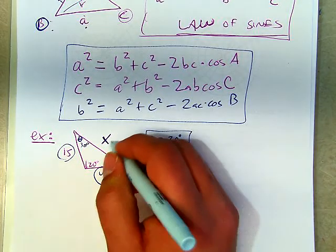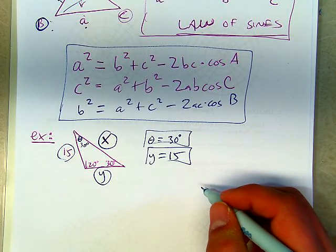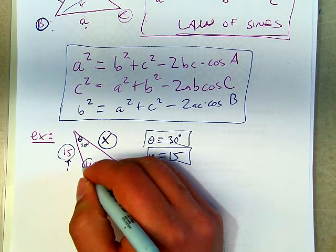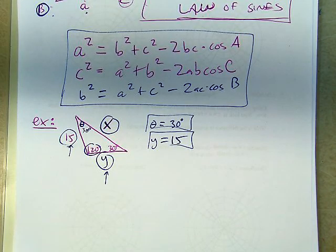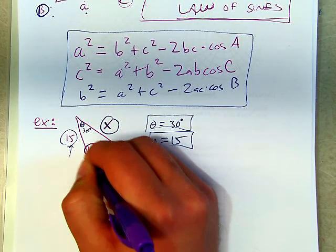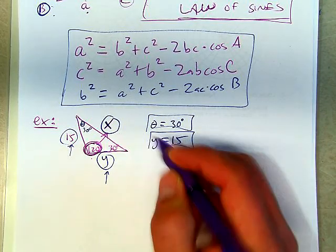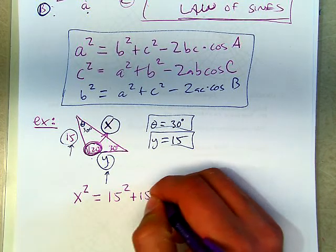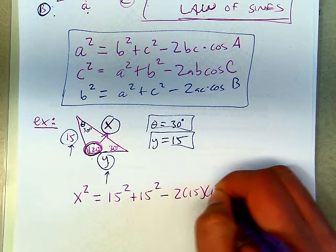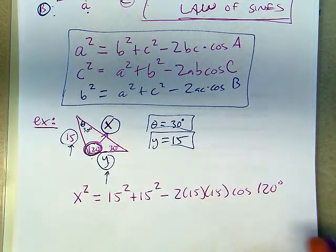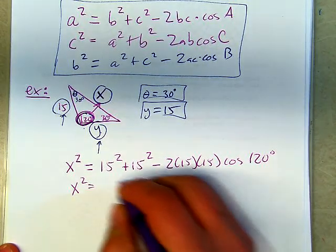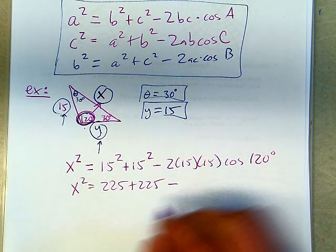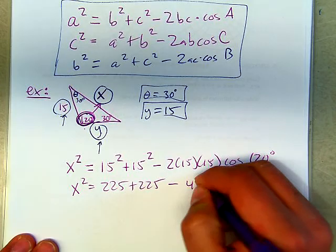To find x, now we have some options. We could do law of cosines. Since I know that this is 15 and this is 15, and I have the angle in between, we do law of cosines. So I'm going to do it that way. So I'm centering myself around this 120 degree angle. So opposite of 120 is x squared. And we're going to say that that's equal to 15 squared plus y, which we said was also 15 squared, minus 2 times 15 times 15 times cosine of 120 degrees.